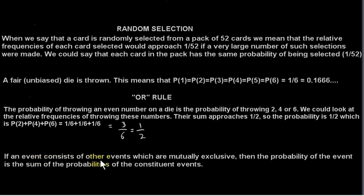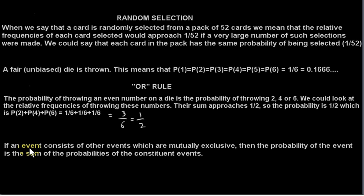If an event consists of other events which are mutually exclusive, then the probability of the event is the sum of the probabilities of the constituent events. So, in the example, our event is getting an even number. That's what the event is. And this event consists of the events getting a 2, getting a 4, or getting a 6. These events are mutually exclusive, which means that if we get a 2, then we certainly don't get a 4 or a 6. Or if we get a 4, that excludes the other possibilities: getting a 2, or a 6. We will see later, in later videos, where we will be dealing with events that are not mutually exclusive. So, this will make more sense later.